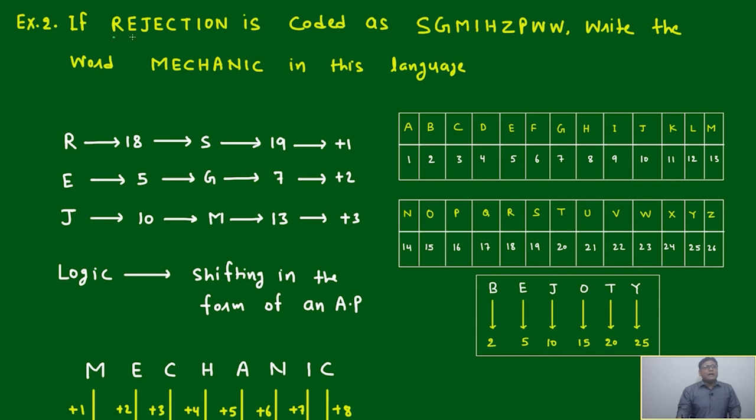Let's try to read this question number two: REJECTION is coded as SGMIHZPWW. Write the word MECHANIC in the same language.